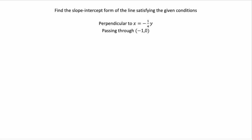Here we're told that we want a line that's perpendicular to the given line, x equals negative one-fourth y, and it passes through the point negative one, zero.